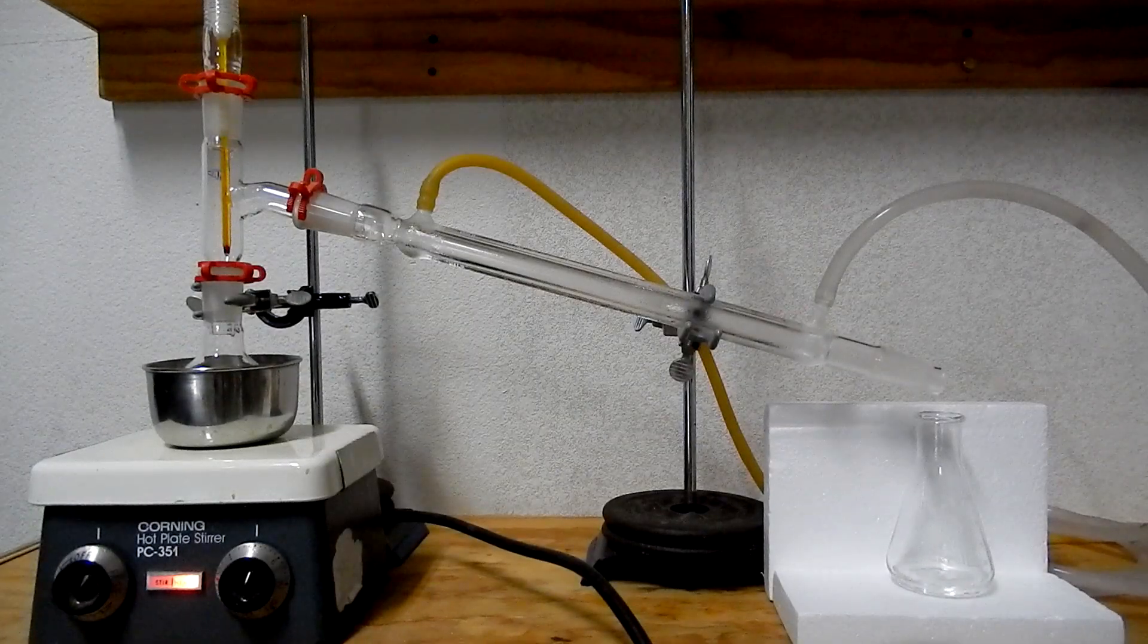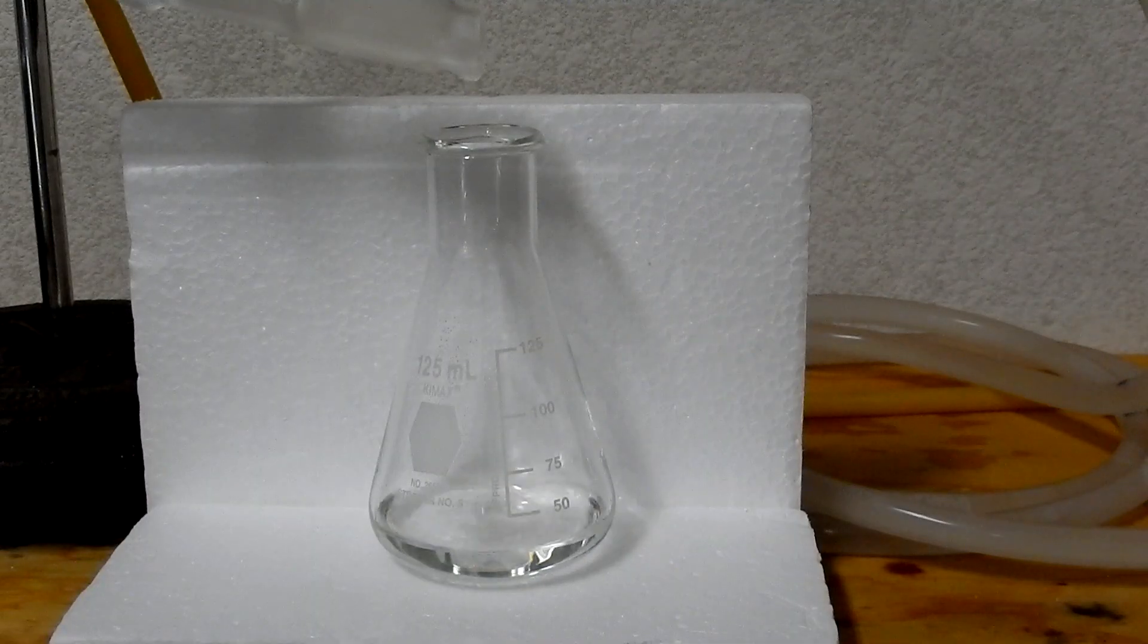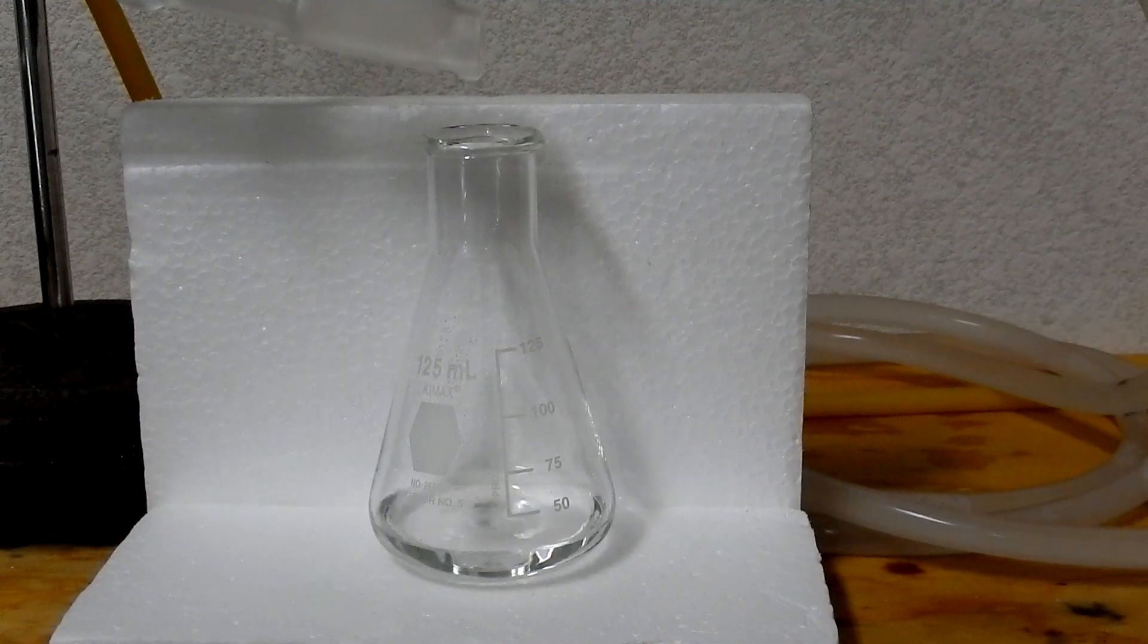Set up for simple distillation and distill off all but about one milliliter of liquid. The distillate is a colorless mixture of dichloromethane and chlorobenzene.